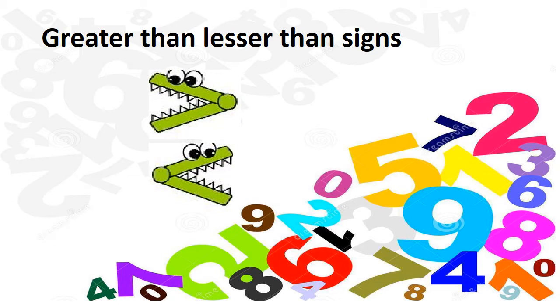So, children, what did we learn? We learned that whenever there are two numbers, the crocodile opens his mouth to the bigger number. So, whenever you have to write greater than and lesser than, always keep the open mouth of the crocodile towards the bigger number.